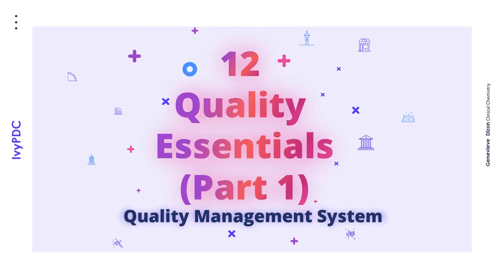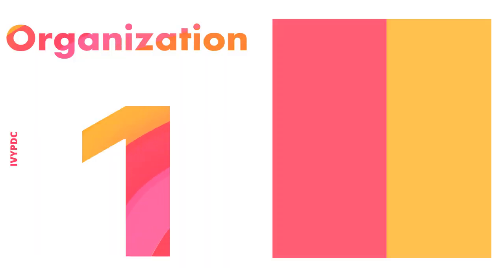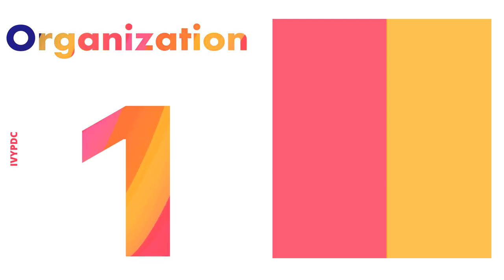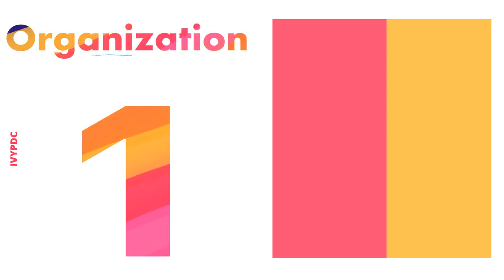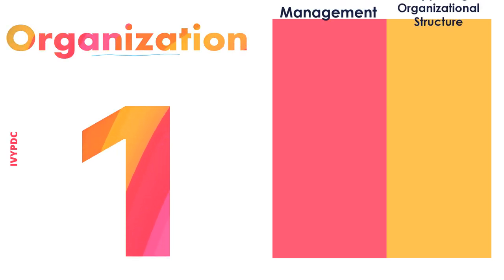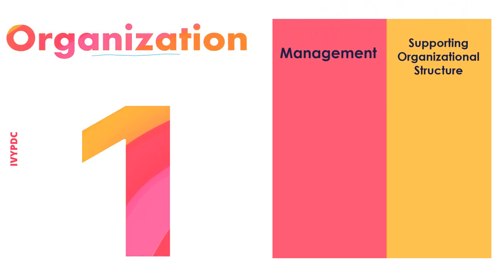Welcome back to our quality management system video. This is part one of the 12 quality essentials. The first of the quality essentials will be organization. The term organization, used in the context of quality management, indicates both the management and some of the supporting organizational structure.